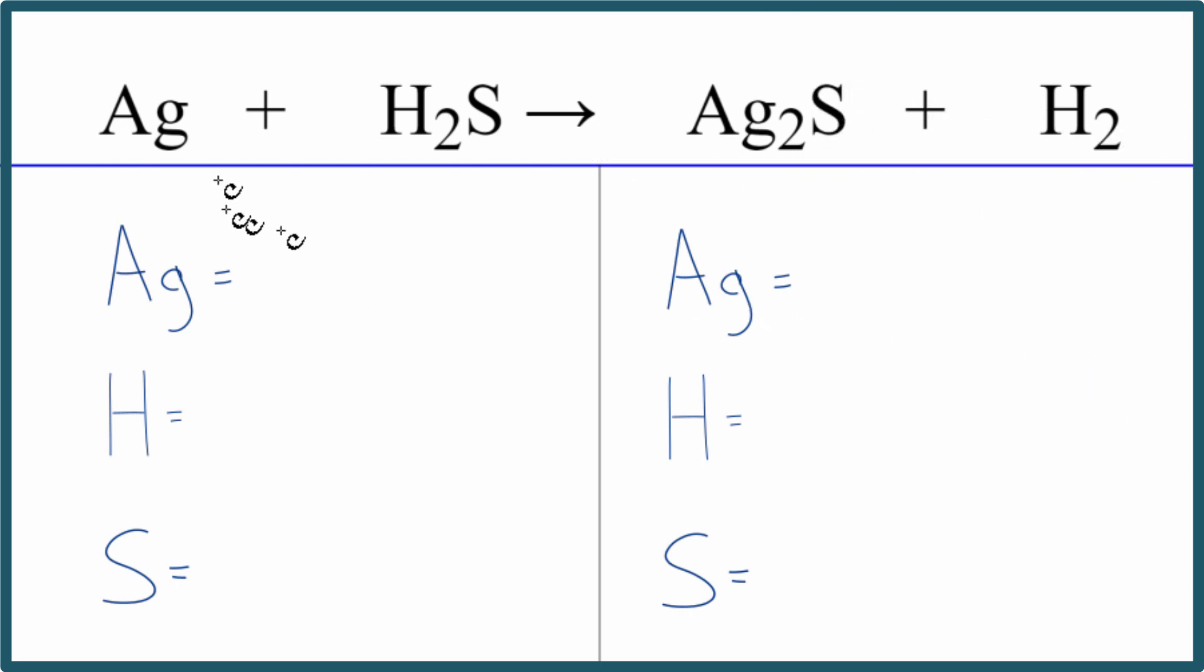You get this Ag2S plus hydrogen gas. This is the tarnish. To balance it, let's count the atoms up. We have one silver, two hydrogens, and one sulfur. On the product side we have two silver atoms, two hydrogen, and then just one sulfur. So everything's balanced except the silvers.